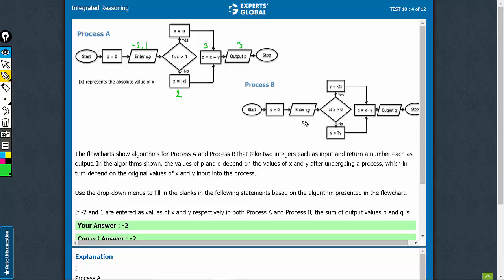In this case, we put minus 2 comma 1. Is x greater than 0? No. So, y is equal to 3y. y becomes 3 into 1, which is 3.